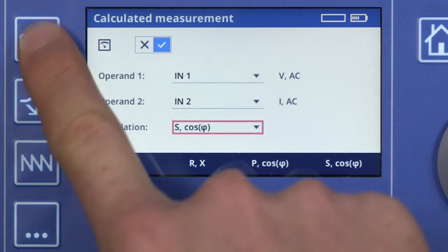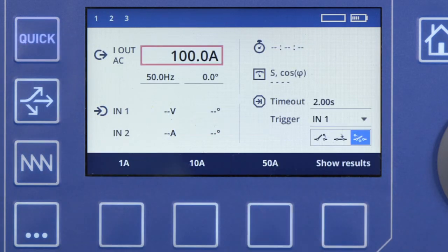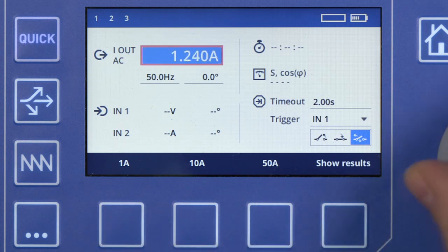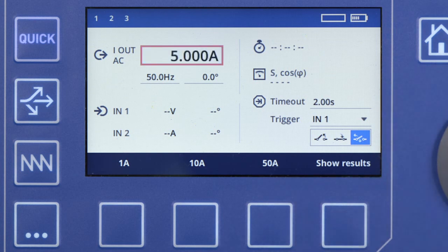In the QUICK app, set a nominal secondary current of 5 amps. Now inject these 5 amps for 2 seconds.